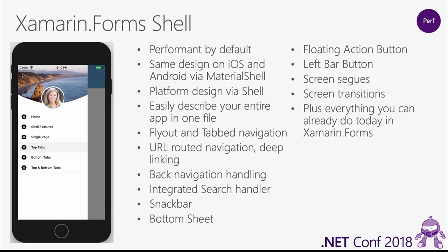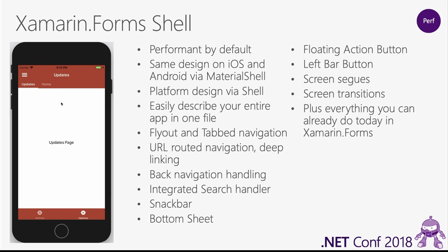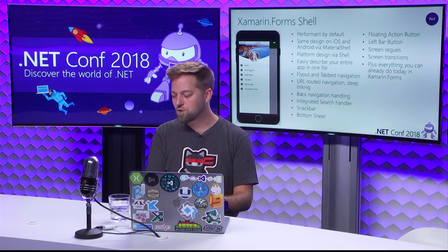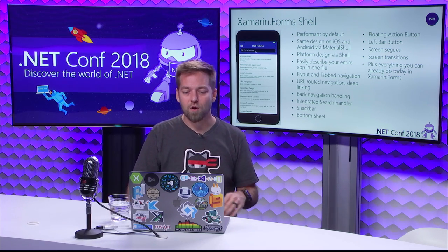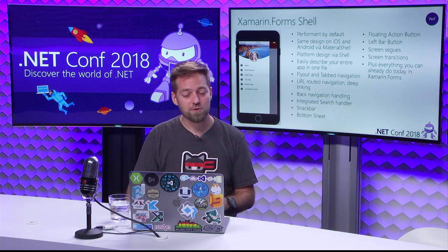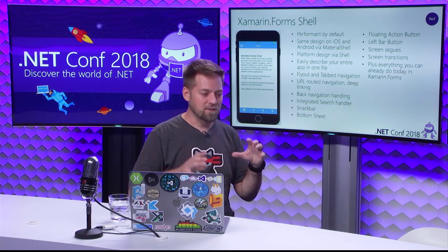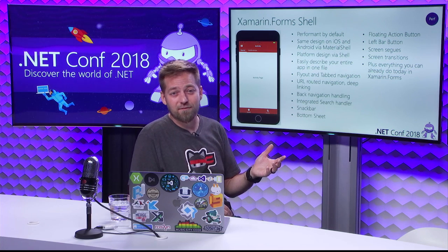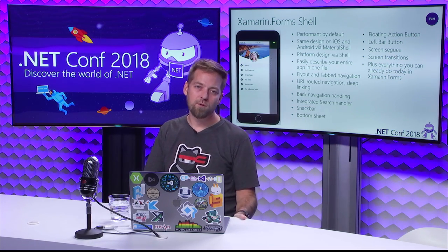Screen segues let you declaratively say: when this happens, go to this page — very similar to iOS interface builder segues. You can do this in XAML or C-sharp and build your routes from that. Screen transitions let you specify: when you execute this segue, I want you to curl, go left to right, right to left, top to bottom, crossfade, and so on. This is more difficult to do today. Shell is really part of Xamarin.Forms — not a new Xamarin.Forms, just a new control and paradigm. We believe it will be the default when it ships, but you can do everything today that you can do in Xamarin.Forms within a shell application.